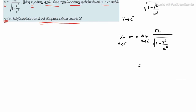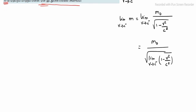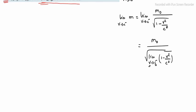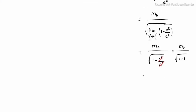Substituting v = c, we get m0 divided by square root of 1 minus c squared divided by c squared. Since c squared divided by c squared cancels, we get m0 divided by square root of 1 minus 1, which equals m0 divided by square root of 0, which is 0. Anything divided by 0 tends to infinity.